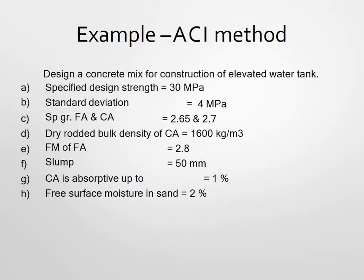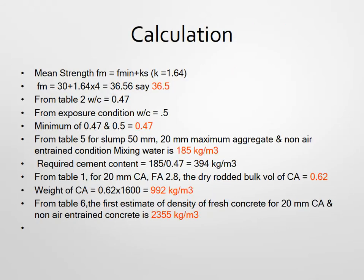Now we discuss a numerical example for the ACI method. Design a concrete mix for construction of an elevated water tank. The specified design strength is 30 MPa, standard deviation is 4 MPa, specific gravity of fine aggregate is 2.65 and coarse aggregate is 2.70, dry rodded bulk density of coarse aggregate is 1600 kg/m³, fineness modulus of fine aggregate is 2.8, slump required is 50 mm, coarse aggregate absorption is 1%, and free water moisture in sand is 2%.